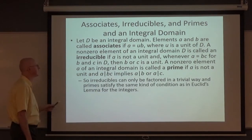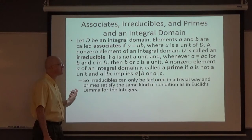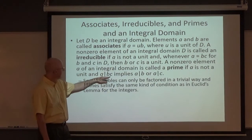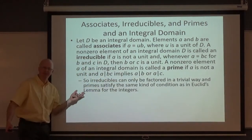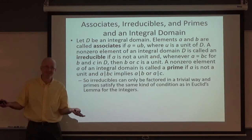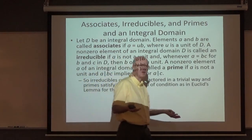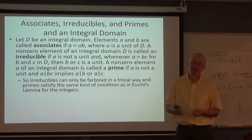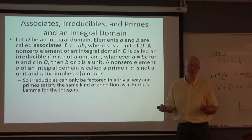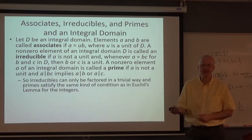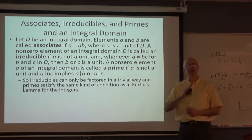Prime is something that satisfies the analog of Euclid's Lemma — except we call it a definition now. A non-zero element of an integral domain is prime if it's not a unit, and if A dividing B times C implies A divides B or A divides C. We exclude units because if you allow plus or minus one to be primes, then unique factorization would be messed up. It's simplest to say units are not primes or irreducibles.